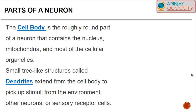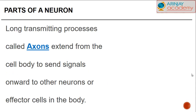The dendrites are like finger-like projections that extend from the cell body. They pick up stimuli from the environment, from other neurons, or from sensory receptor cells, and they pass those stimuli on to the cell body. The axons are basically transmitting processes — like a wire — that extend from the cell body and help to send signals onwards to another neuron or to effectors, which are basically muscles or limbs within the body.